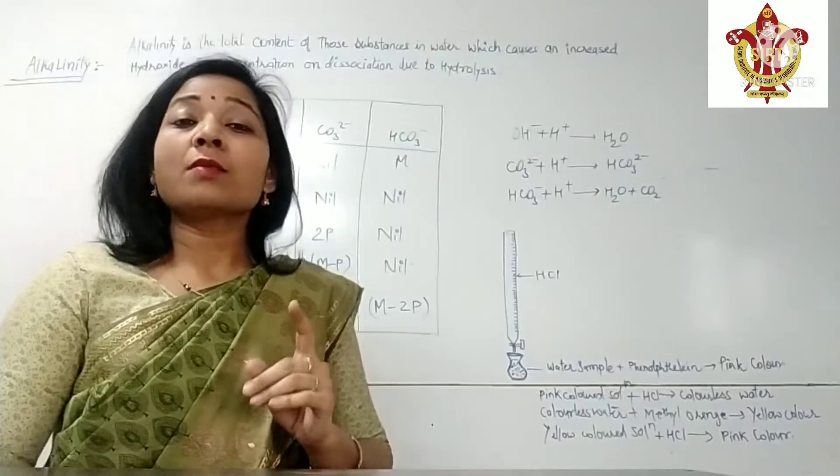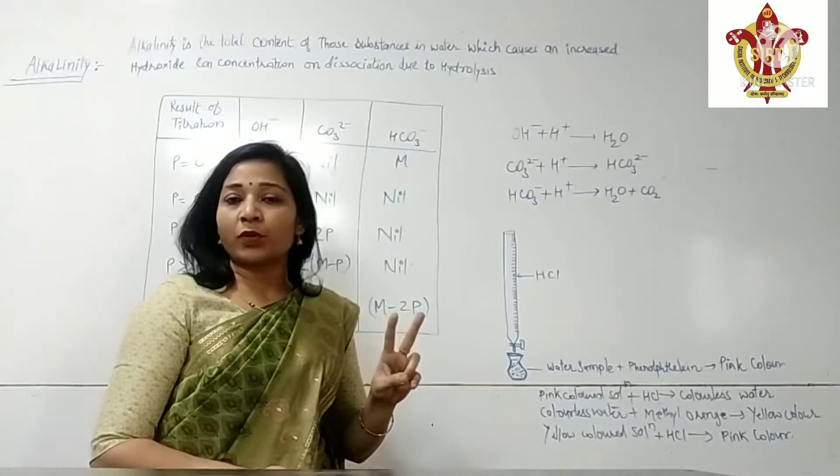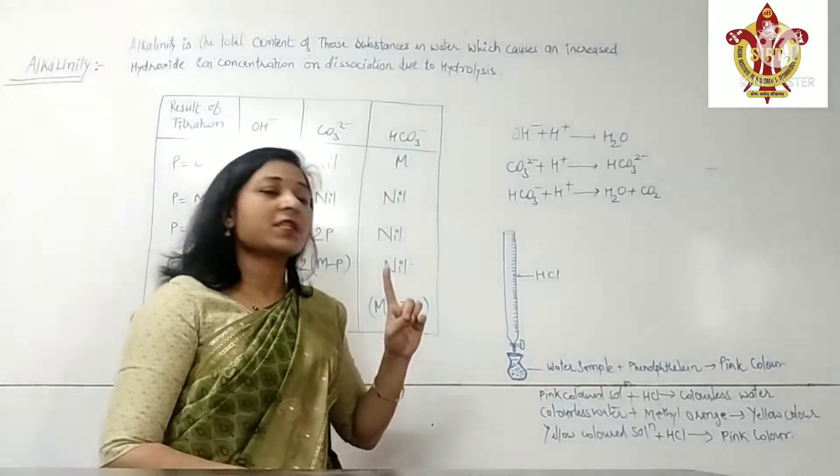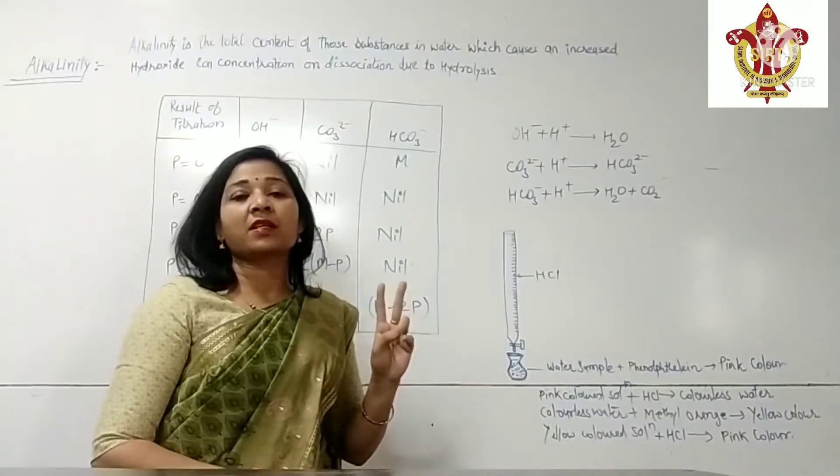That is known as methyl orange endpoint and that is denoted by M. So we have two endpoints. First, phenolphthalein endpoint which is represented by P. Second, methyl orange endpoint which is represented by M.